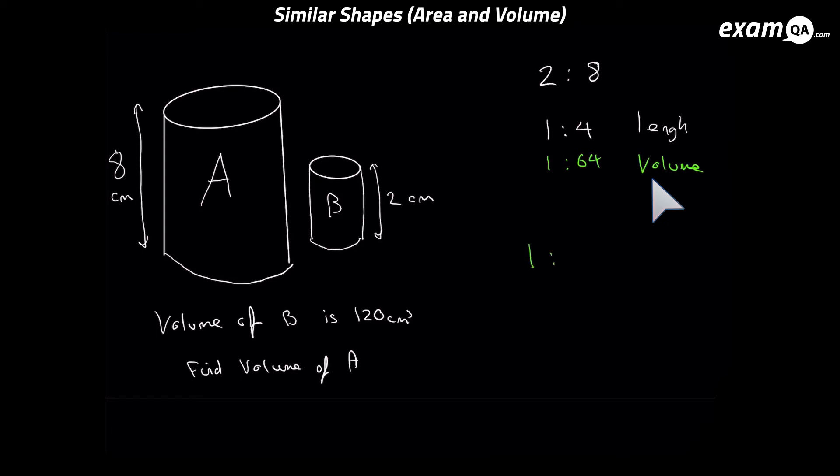Okay so what do we do with that 1 to 64? The 1 side is referring to the smaller shape which is B. The 64 is referring to the bigger one which is A. Now we know the volume of B, it's 120. So we need to make that side with B into 120. Now because it's 1 at the moment it's really easy to do. You just multiply it by 120. So multiply the 1 by 120 gives us 120, and 64 times 120 gives us 7680. What it's saying is that if the volume of B is 120, the volume of A would be 7680. And that's our answer.